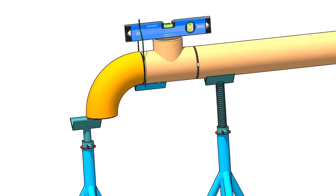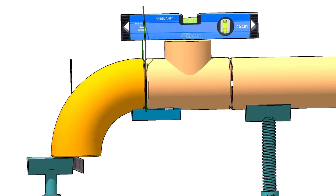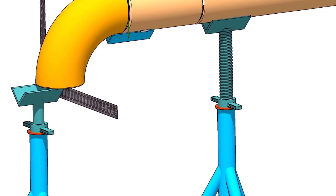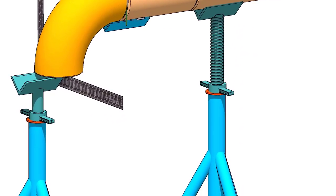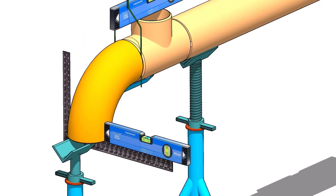Hold a large right angle or a straight edge below the elbow face, firmly. Put a level bottle on the right angle as shown. Rotate the elbow to make the face level. Tack weld on both sides of the elbow with the tee.